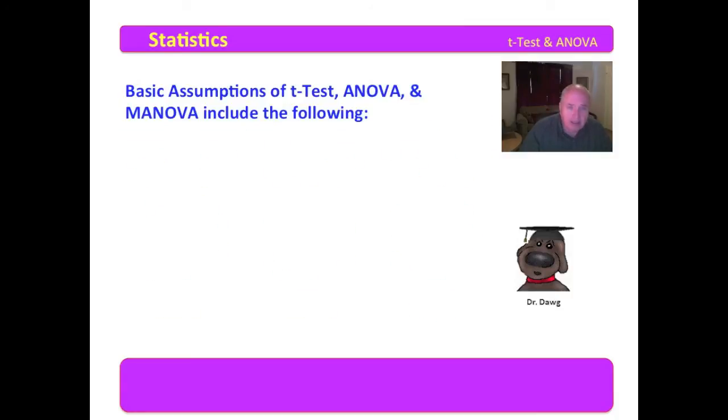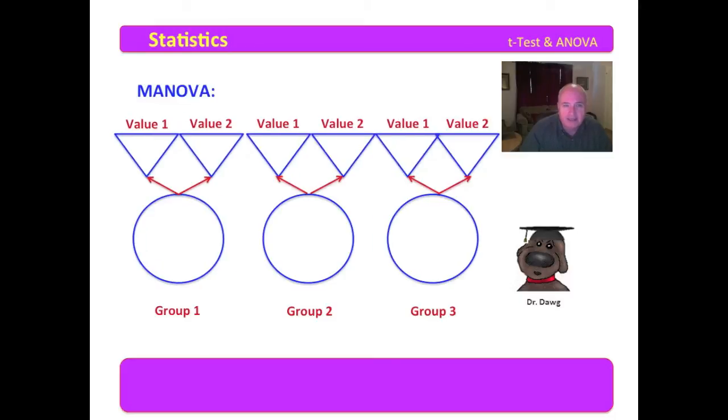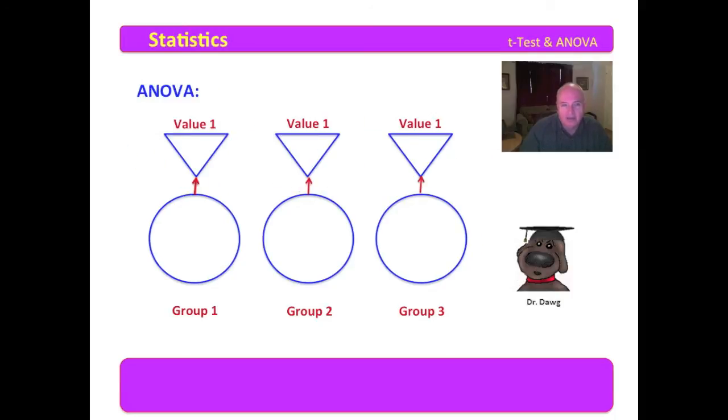Now, the basic assumptions of the t-test, the ANOVA, and MANOVA, include the following. Now, I want to remind you, do you see the similarity in MANOVA to ANOVA to t-test? And MANOVA with only one variable value is an ANOVA. And ANOVA with only two groupings is a t-test.